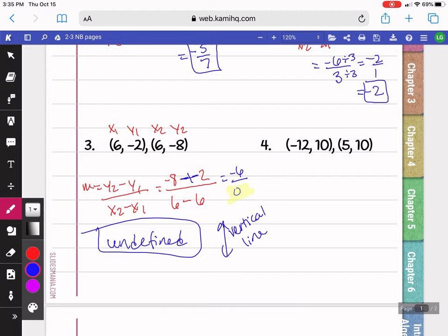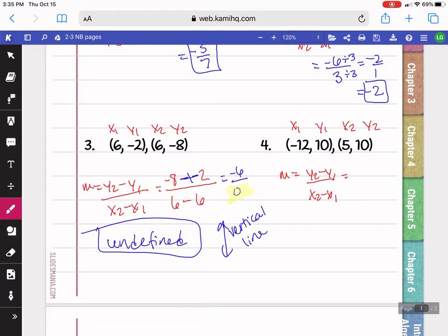On our next problem, we're going to label our x1, y1, x2, y2. For y2, I have 10 minus y1 is 10. x2 is 5 minus x1 is negative 12. On my denominator, right away, I'm going to change my double negative to a plus. 10 minus 10 is 0, and 5 plus 12 is 17.